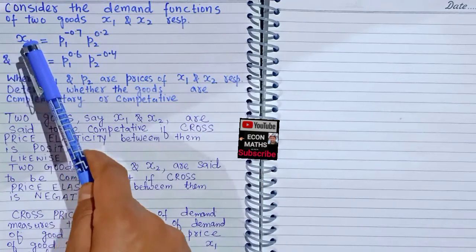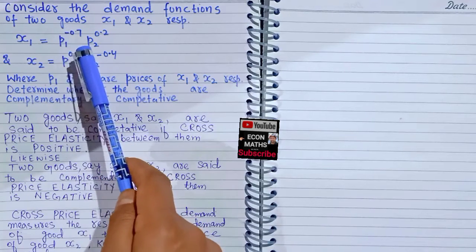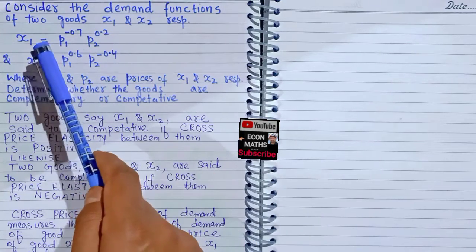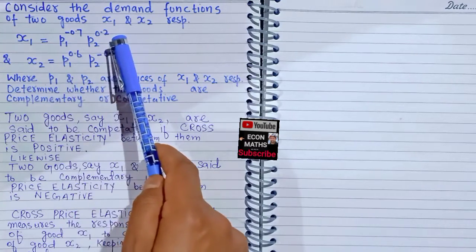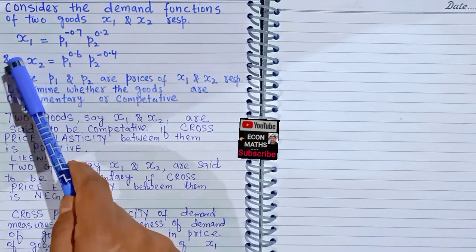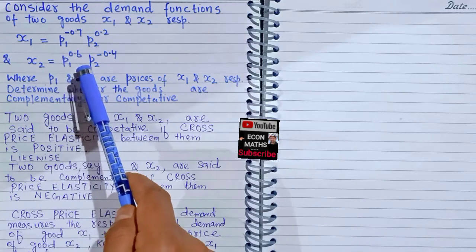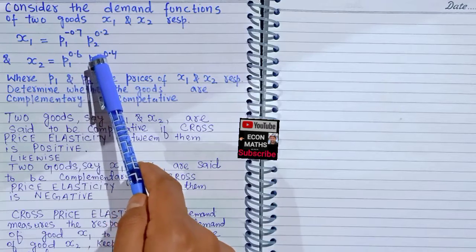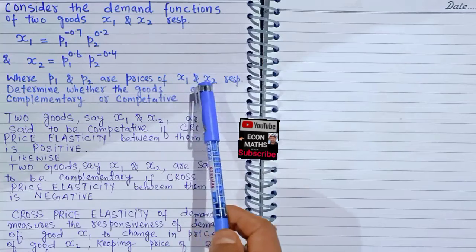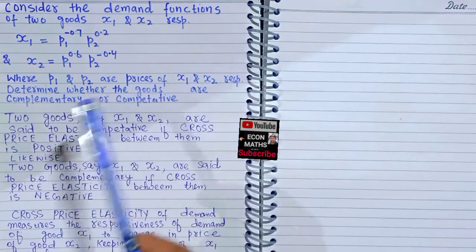The demand function of good x1 is equal to P1 raised to the power minus 0.7 times P2 raised to the power 0.2. The demand function of good x2 is equal to P1 raised to the power 0.6 times P2 raised to the power negative 0.4. P1 and P2 are the prices of x1 and x2 respectively. We need to determine whether the two goods are complementary or competitive.